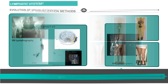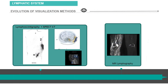With the evolution, lymphoscintigraphy can be combined with SPECT CT. This is an example of melanoma of the skin, and you can see two sentinel nodes here in the axilla and in the groin. When you combine with SPECT CT, you can observe the retroperitoneal node as well. It's very interesting.